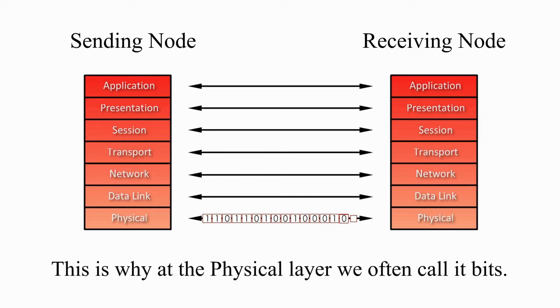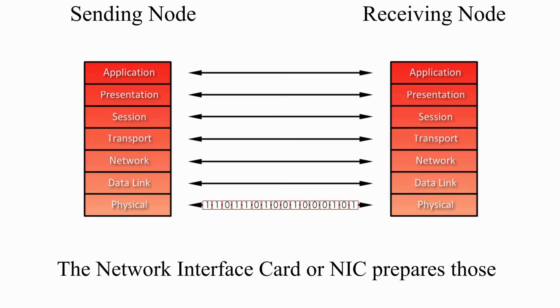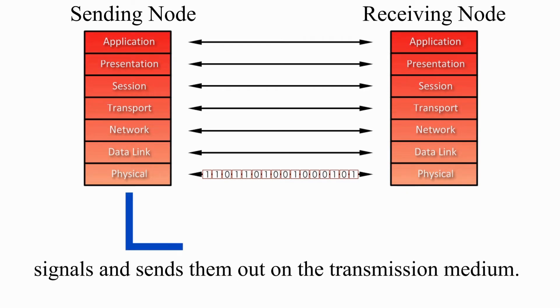That's why at the physical layer, we often call it bits. The network interface card, or NIC, prepares those signals and sends them out on the transmission media.